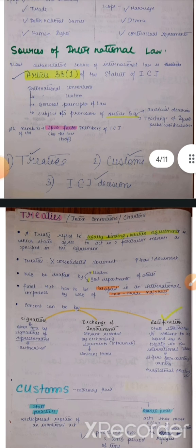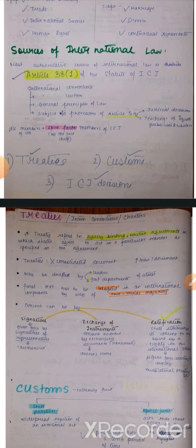Subject to the provisions of Article 59 of ICJ, judicial decisions of the International Court of Justice and teachings of scholars can also be considered as a source of public international law — international law in general.